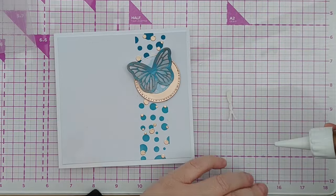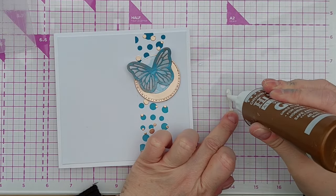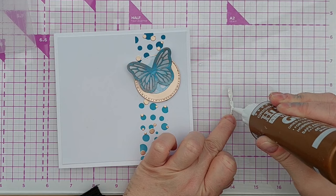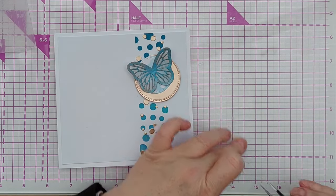I did cut a butterfly body from the rose gold card and that brings that rose gold card to the front.